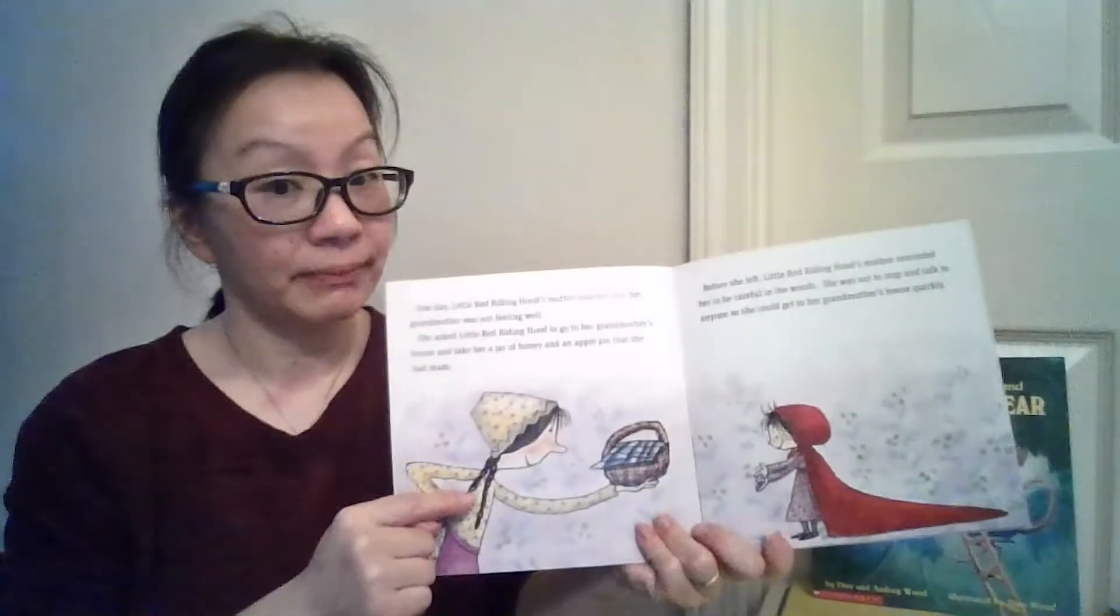Before she left, Little Red Riding Hood's mother reminded her to be careful in the woods. She was not to stop and talk to anyone so she could get to Grandma's house quickly. Mommy told her that you need to remember.